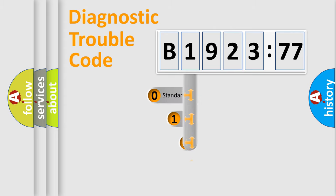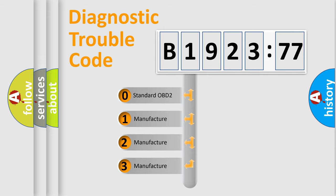Powertrain, body, chassis, network. This distribution is defined in the first character code.